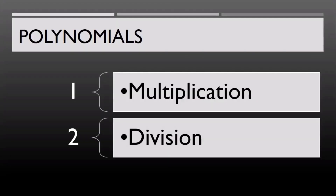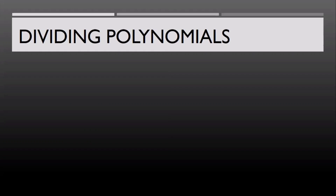Let's now proceed with dividing polynomials. To divide two monomials, we're going to apply the laws of exponents and we're going to reduce the numerical coefficients to their lowest term.